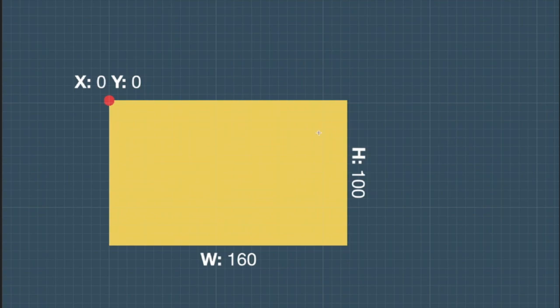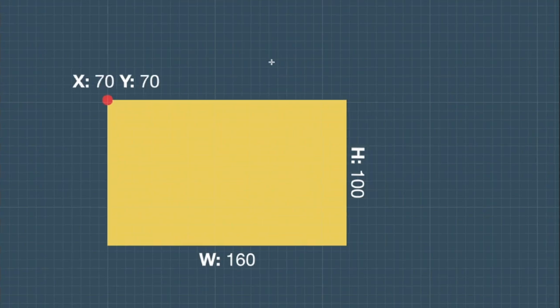In this diagram you can see we have a UIViewController and we want to create a new UIView inside it. This yellow box is our new UIView. The bounds of this view would have a coordinate system of 0,0 for x and y, a height of 100, and a width of 160. If you look at the frame, the x and y would be 70,70, and the height and width would be the same — 100 and 160 respectively.